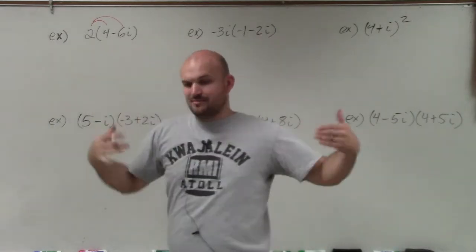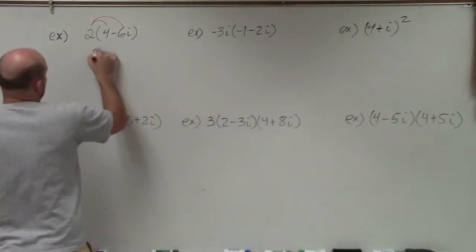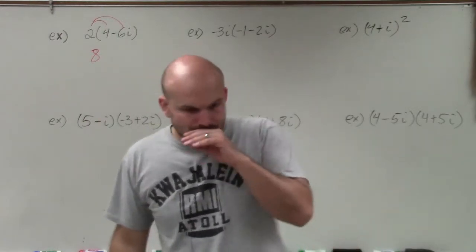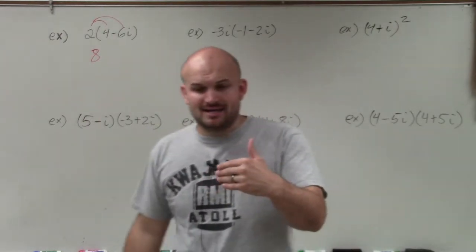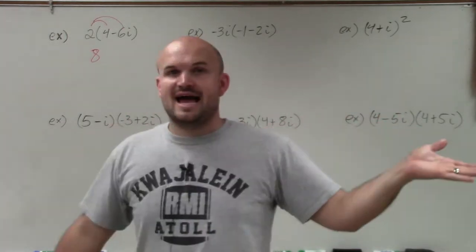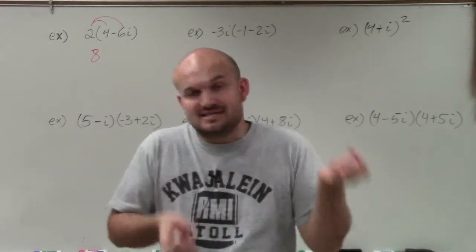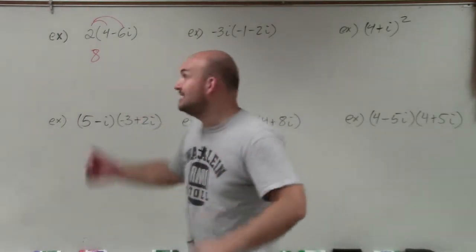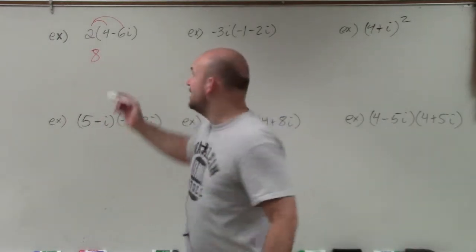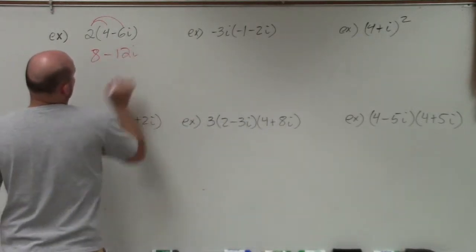Multiplying complex numbers is the same thing. We know 2 times 4 is 8. How do we multiply 2 times an imaginary number like negative 6i? Just like multiplying variable expressions — if I said 2 times negative 6x, we multiply the 2 by the coefficient negative 6 and keep the variable the same, giving negative 12x. Same thing here: we keep the imaginary unit i and multiply 2 times negative 6, giving negative 12i.